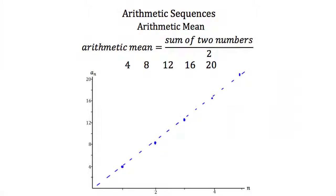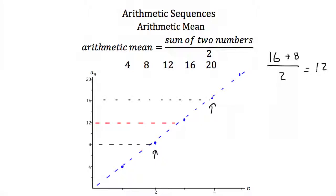If I wanted to find the halfway point between our fourth term and our second term, I take the value of the fourth term, which is 16, add it to the value of the second term, which is 8, and divide that sum by 2. 16 plus 8 is 24, and 24 divided by 2 is 12, so halfway between 16 and 8 is 12. Notice that when we find 12 is halfway between 16 and 8 and take that back down to the x-axis, we'd be at our third term. So using the arithmetic mean, we can find missing terms in our sequence.